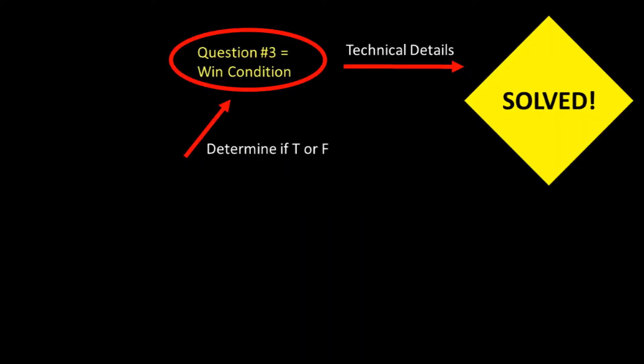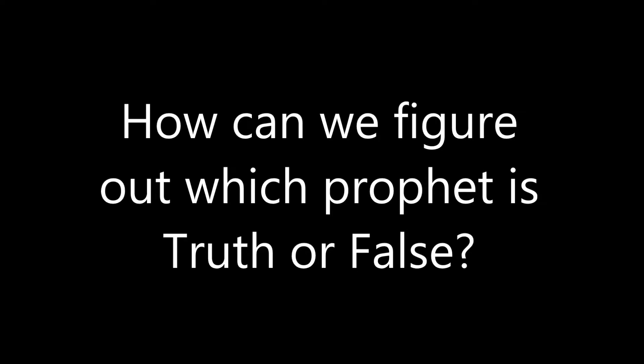This arrow here means we need to know which one is Truth and which one is False, and this circle is the question we can ask to solve the riddle, aka our win condition. That's how we spend question two getting to the win condition. So let's backtrack.